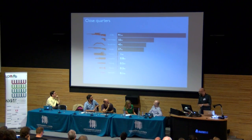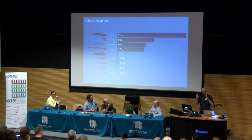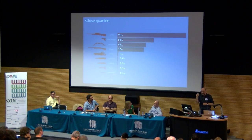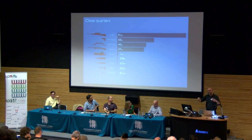Scott McCloud talks about what he calls closure, which is what happens in the gaps between panels in a comic book — those little white spaces where the audience start telling the story, where they're in charge and fully engaged in moving the story through time and space, and filling in those gaps. And that is what happens between the gaps in a bar chart.